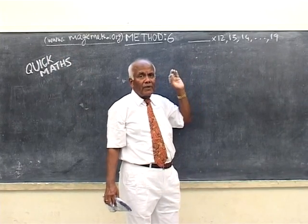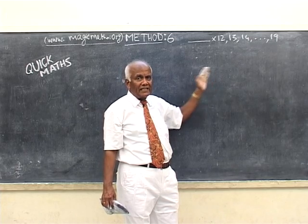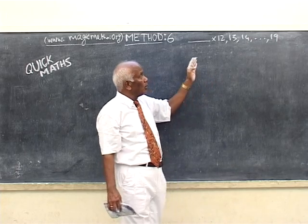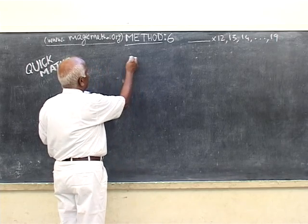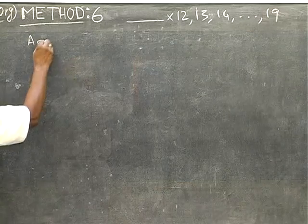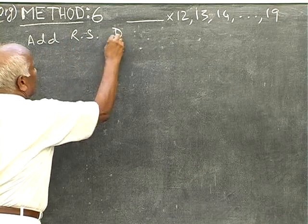And another thing is when you multiply, we add the right side digit. What do we do? We add the right side digit. I shall write it here as a method: add right side digit.